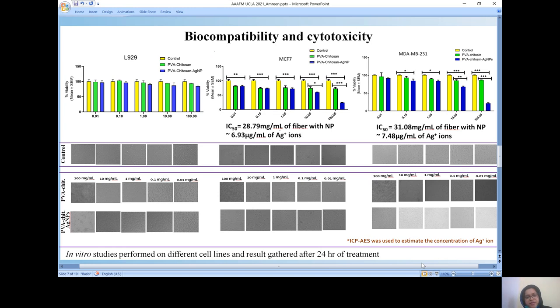This estimation was done with the help of ICP-AES and the treatment time or the result reported is after 24 hours. Below is the morphology of the cells and the intactness after treatment with different concentrations of the PVA chitosan AgNPs.